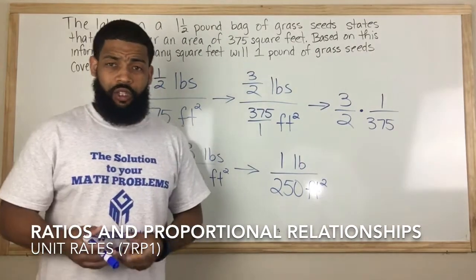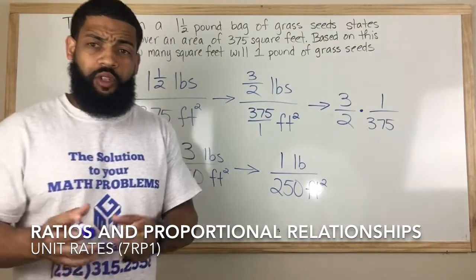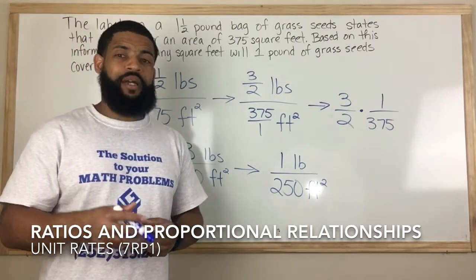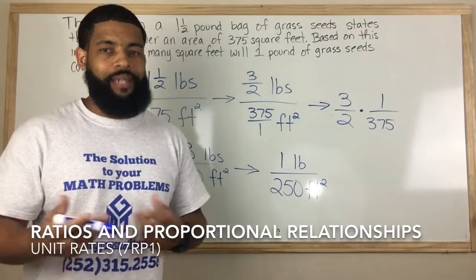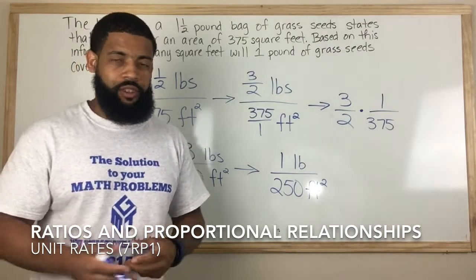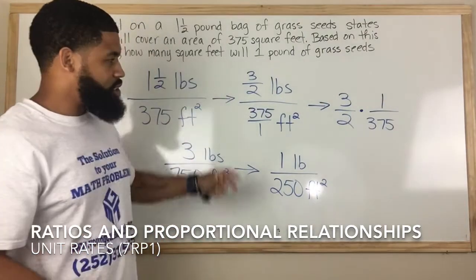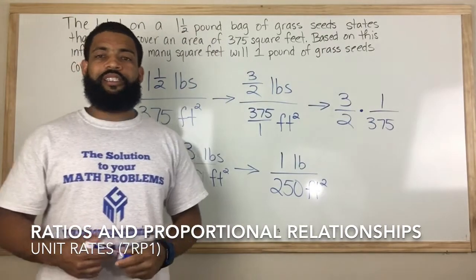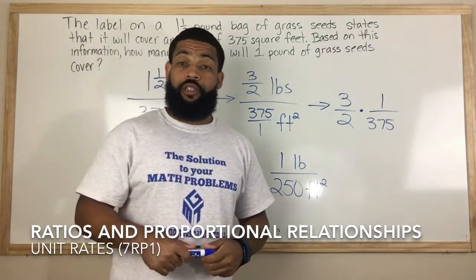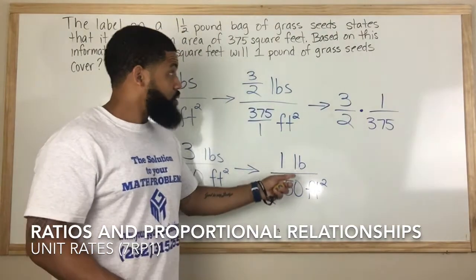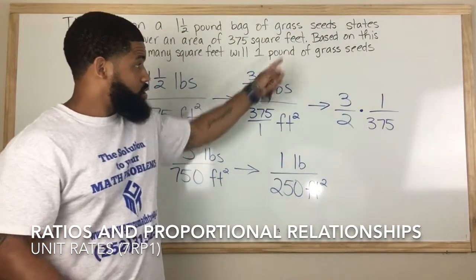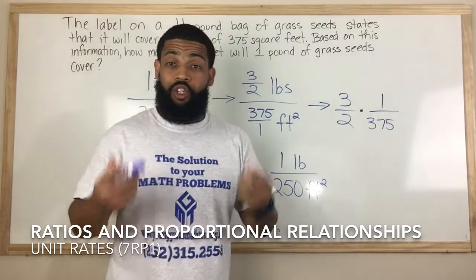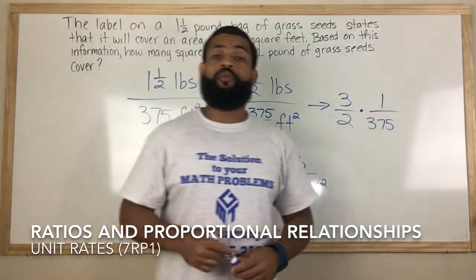Remember, there are different variations of how we can solve this. We didn't specifically set up a proportion, but we're essentially doing the same thing — just a different method. We're keeping it as a ratio, but we still used several concepts to arrive at our answer. The solution is 250 square feet, and this is also a unit rate.